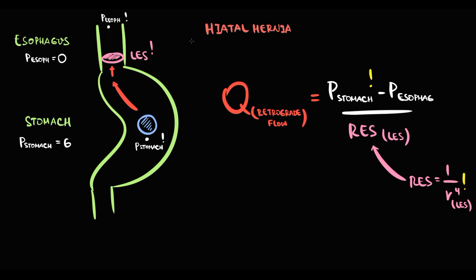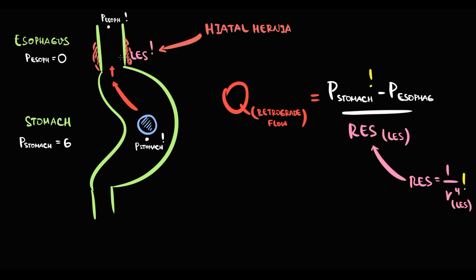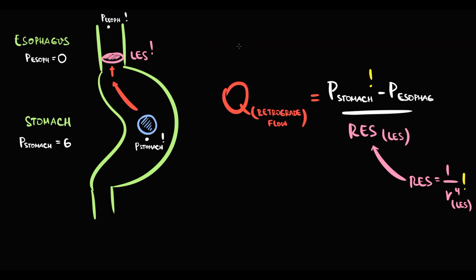Another factor is hiatal hernia. Hiatal hernia is a type of hernia where abdominal organs — typically the stomach — enter through an opening in the diaphragm into the thoracic cavity. In hiatal hernia, intragastric pressure mostly remains the same, but the function of the lower esophageal sphincter becomes completely disrupted. In this pathological state, the lower esophageal sphincter cannot create resistance to stop retrograde flow. As a result, stomach content passes by pressure gradient into the esophagus — this retrograde flow we call GERD.